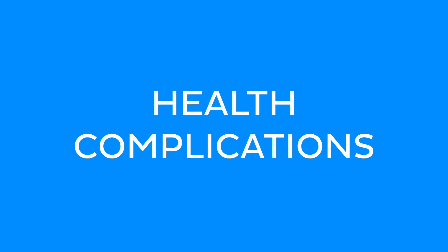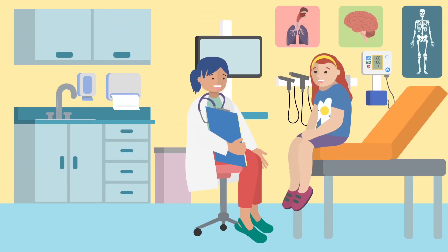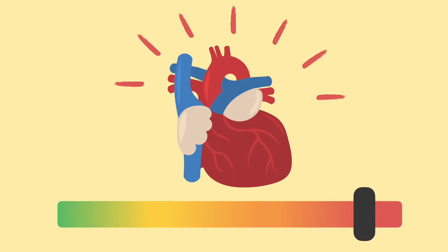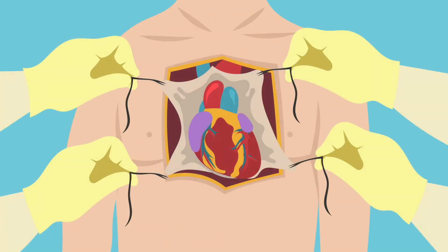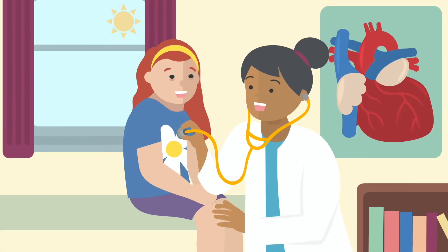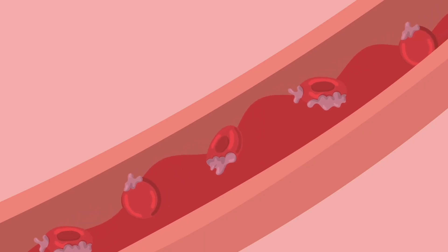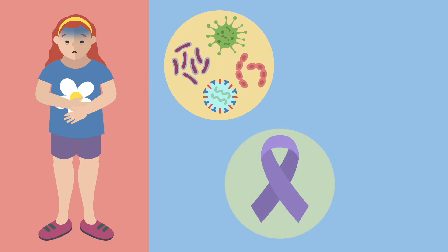People with Down syndrome may face various health complications throughout their lives, making regular medical check-ups essential. Around half of all individuals with Down syndrome have congenital heart defects, ranging from mild to severe, often affecting the walls separating the chambers of the heart — sometimes requiring surgery. Regular cardiologist visits are crucial. People with Down syndrome can also develop blood cell abnormalities, including a form of blood cancer called leukemia. Plus, their immune system may not function properly, making them more prone to infections, certain types of cancer, and autoimmune conditions.